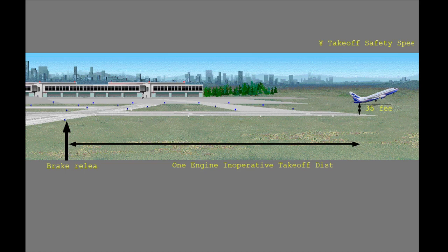In the one-engine-out case, the total distance from brake release to the point where the airplane is 35 feet above ground level is referred to as the one-engine-inoperative takeoff distance. There is a weight for which the actual runway length available equals the one-engine-inoperative takeoff distance.